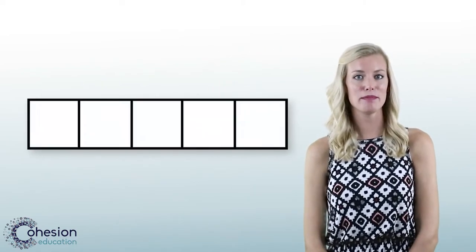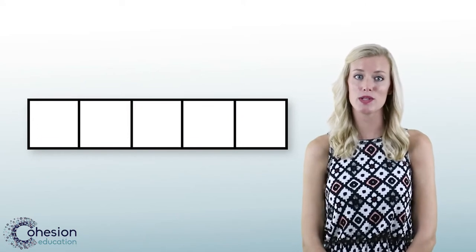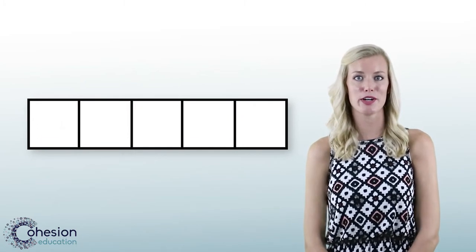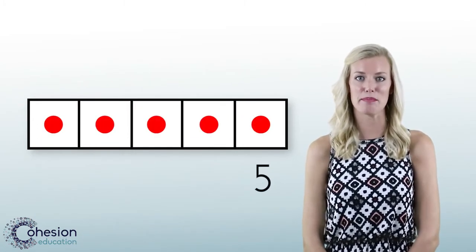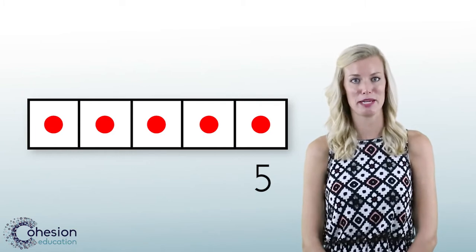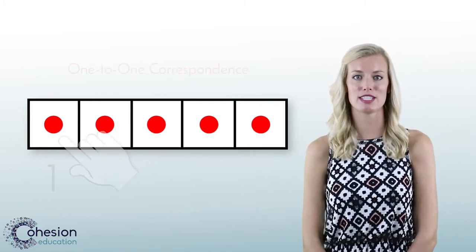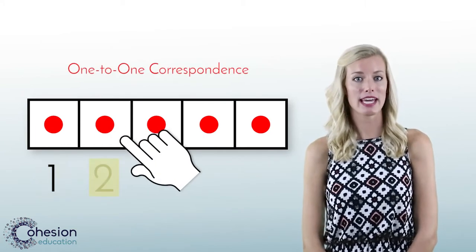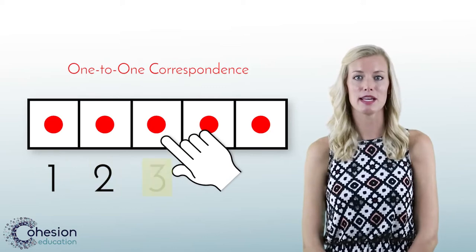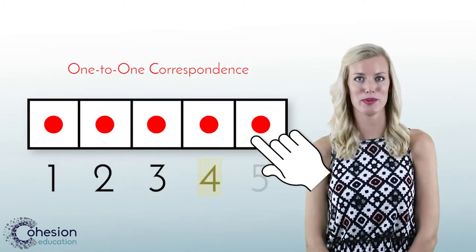A 5 frame is a tool that is used for students to visualize the numbers 0 through 5. In this example the number 5 is shown in a 5 frame. Students are expected to point to the counters in the frame while counting with their fingers by touching each of the items shown.